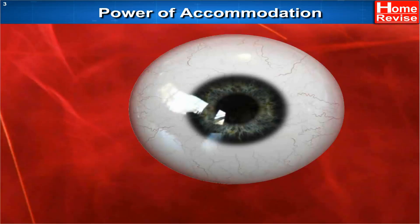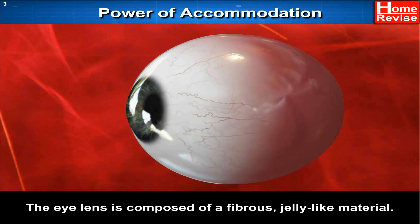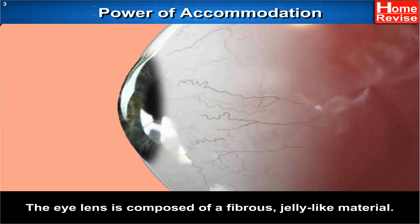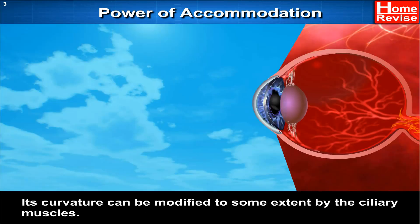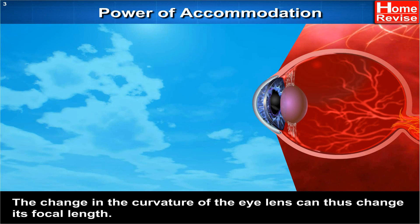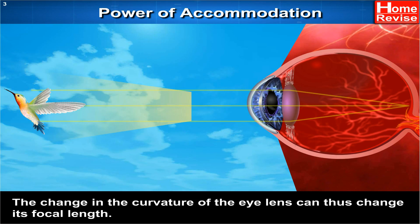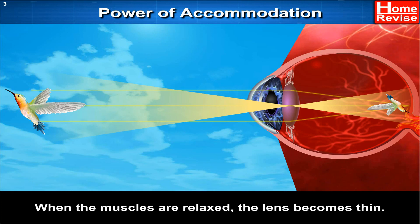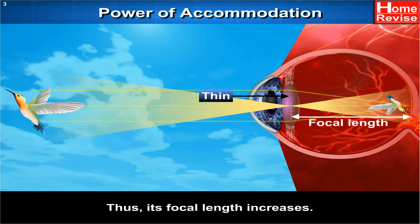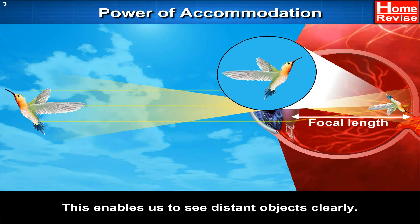Power of Accommodation: The eye lens is composed of a fibrous, jelly-like material. Its curvature can be modified to some extent by the ciliary muscles. The change in the curvature of the eye lens can thus change its focal length. When the muscles are relaxed, the lens becomes thin, and its focal length increases. This enables us to see distant objects clearly.